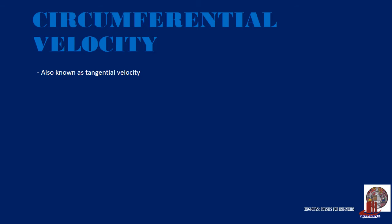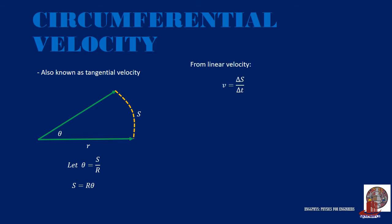Let's move on to circumferential velocity, also known as tangential velocity. Taking a sector of a circle with radius r, the included angle is theta and the displacement is s. For a small portion of theta, theta equals s over r, or displacement s equals radius r times theta. From linear velocity, velocity is the change in displacement over time, so plugging in displacement we get delta(r·theta) over delta t. Since omega is the change in theta over time, we simplify the equation for circumferential velocity as v equals r·omega, given in meters per second.